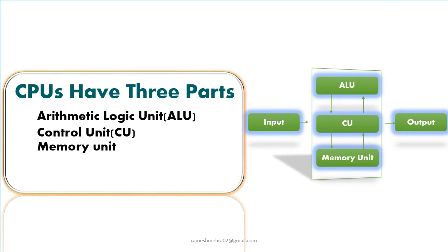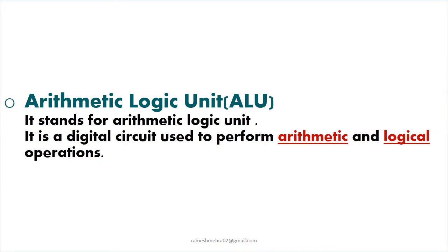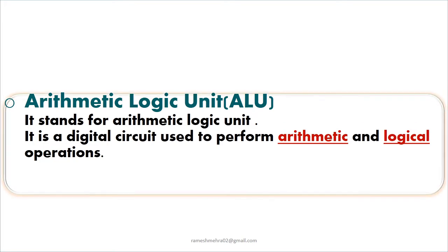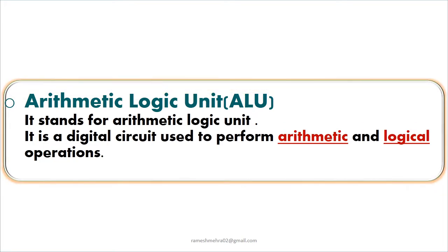Now we will learn about the CPU's three parts. First one is Arithmetic Logic Unit, second one is Control Unit, and third one is Memory Unit. ALU stands for Arithmetic Logic Unit. It is a digital circuit used to perform arithmetic and logical operations.